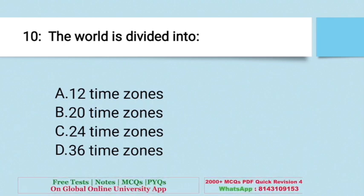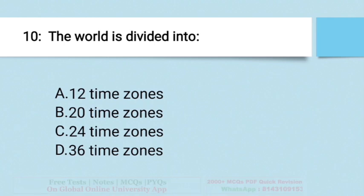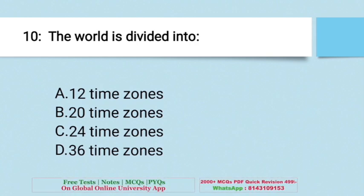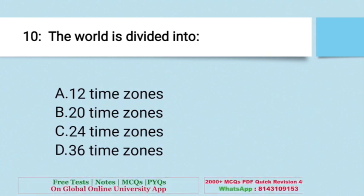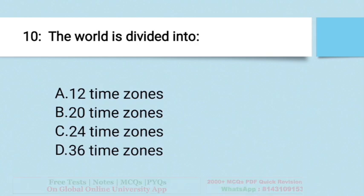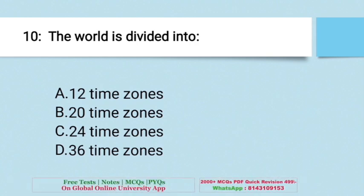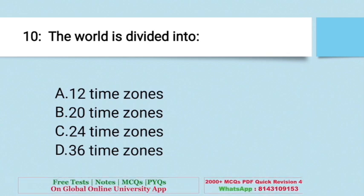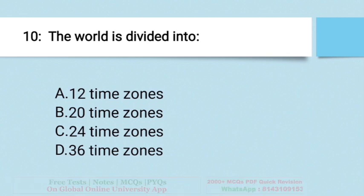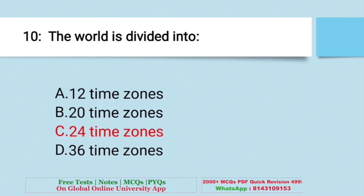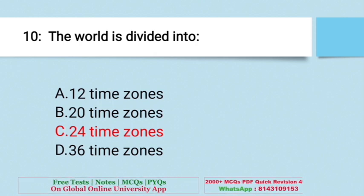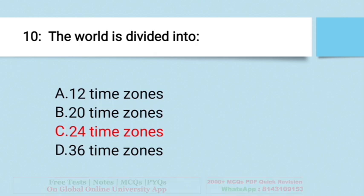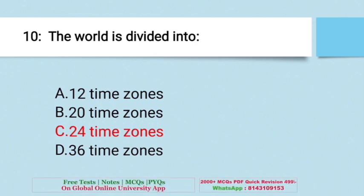Question: The world is divided into how many time zones? A. 12, B. 20, C. 24, D. 36. The right answer is C — 24 time zones. The world is divided into 24 time zones.